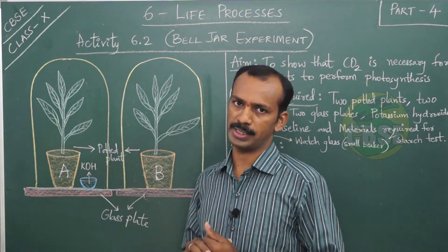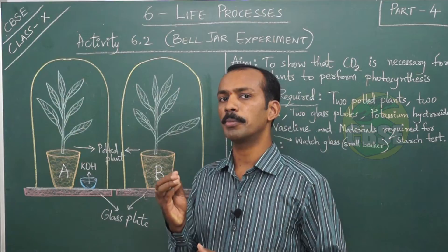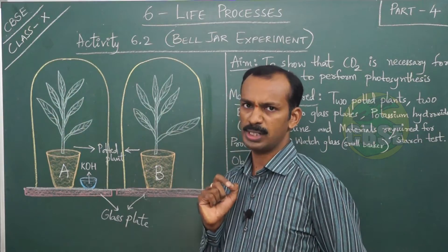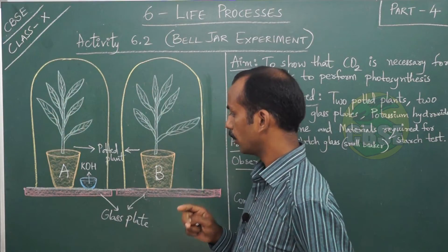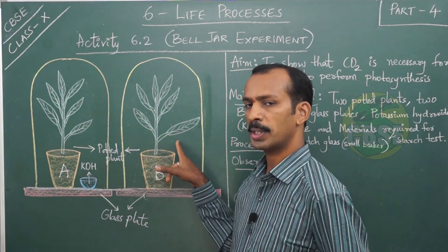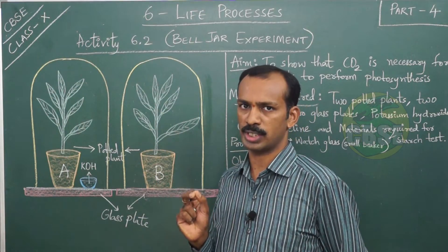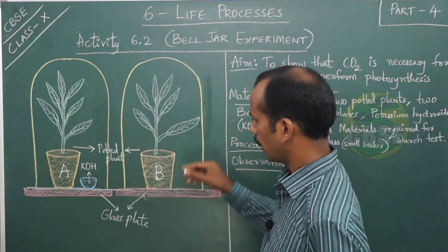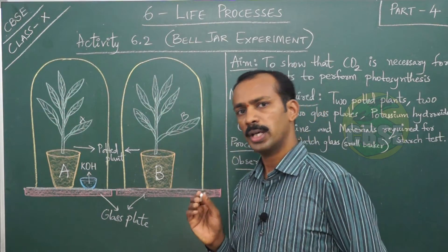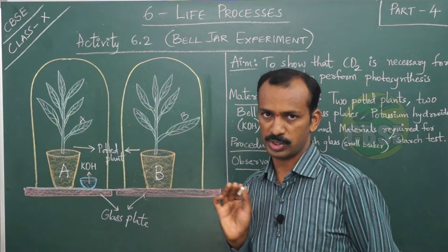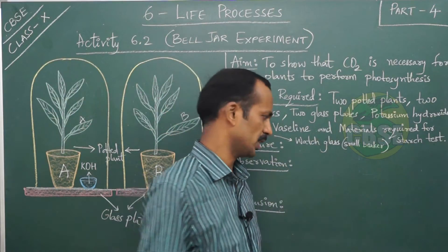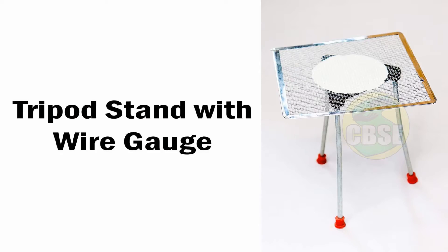Before doing this activity, these two potted plants were kept in the dark for three to four days. The purpose of that is to remove the starch which is already present in them. After four to five hours in sunlight, you have to select one leaf from potted plant A and another leaf from potted plant B and send them for starch test individually — this is leaf A and this is leaf B.